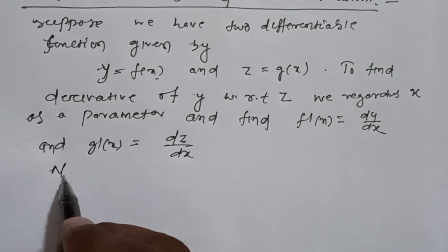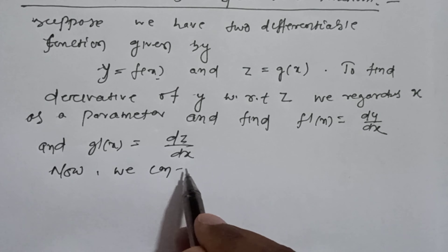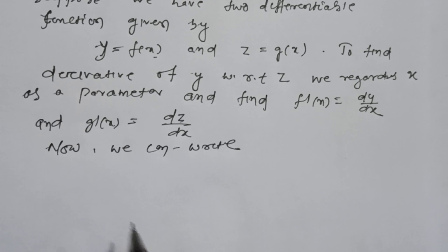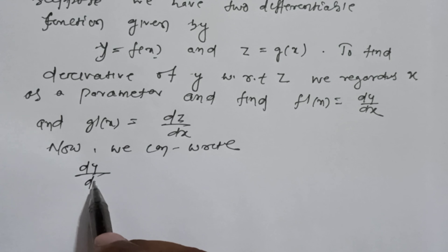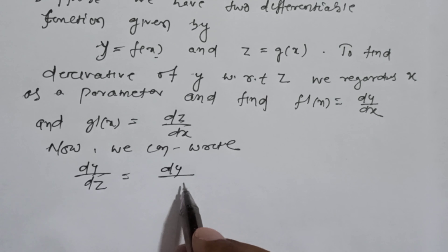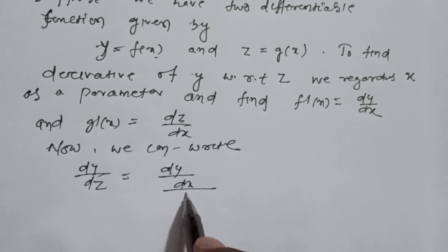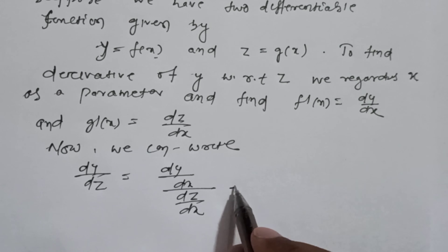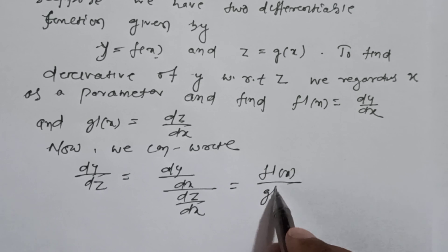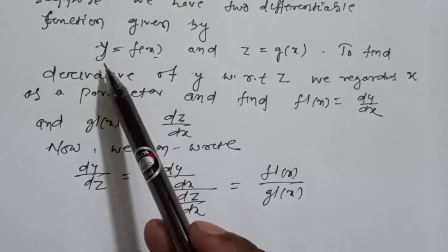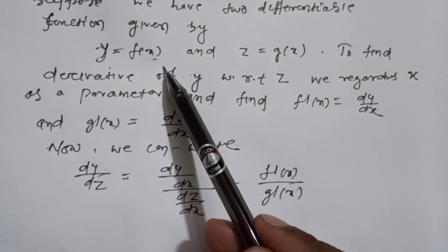Now we can write dy/dz = (dy/dx) / (dz/dx). So y = f(x) and z = g(x).